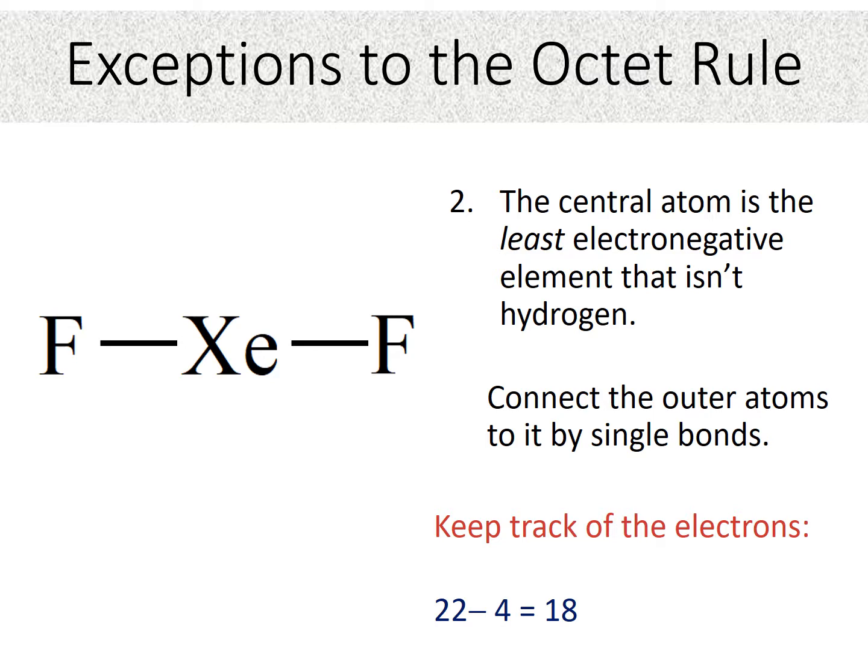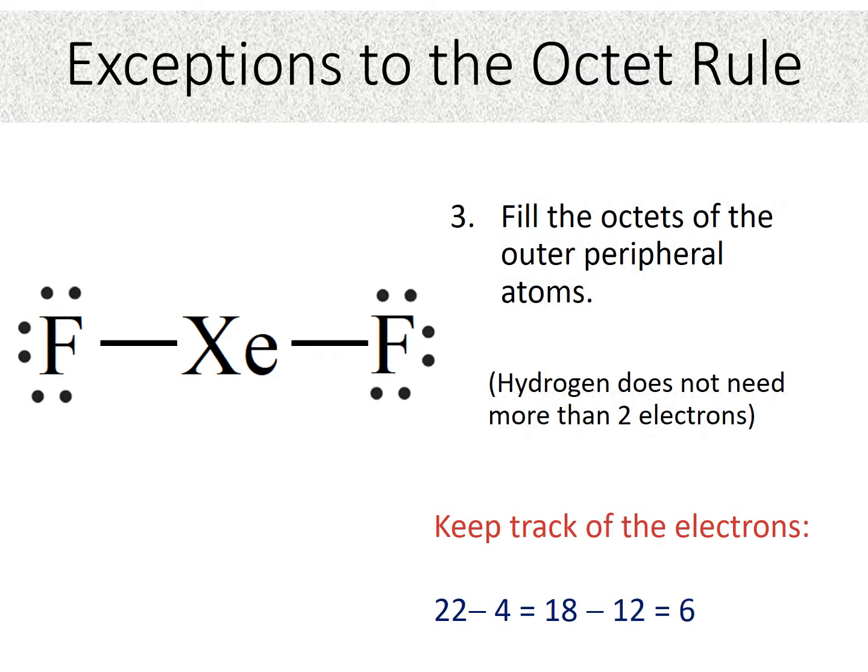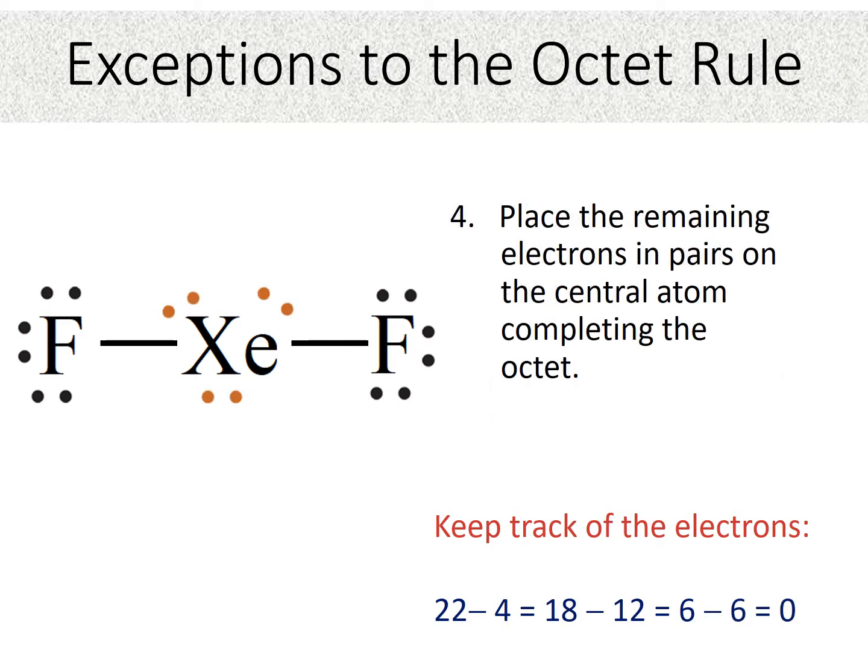Next, then we fill the octets of the outer peripheral atoms. So each fluorine has two electrons. So we need six more to give us a total of eight around each fluorine atom. So how many dots have we used? Well, we've used 12. So 18 minus 12 gives us six electrons left over.